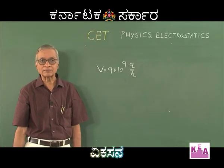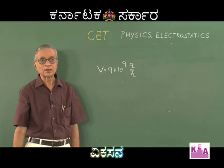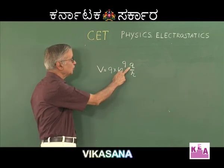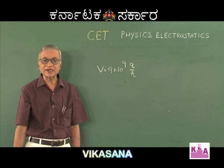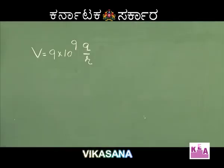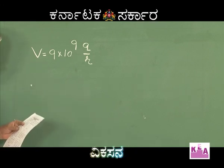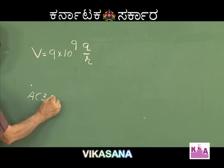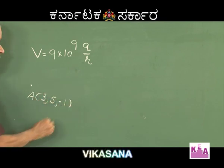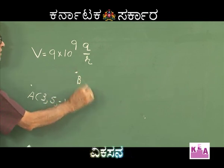Please note that I am assuming air medium. In this case, Q is directly given, but R is not directly given. The charge Q is at the point A (3, 5, -1). The point B is with coordinates (0, 3, 5).